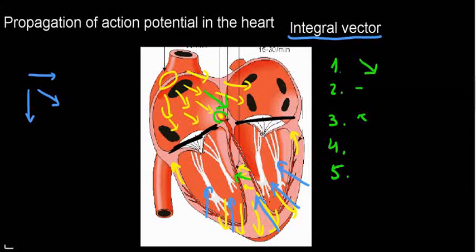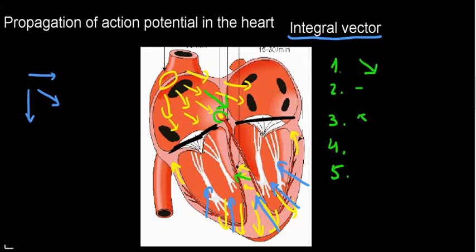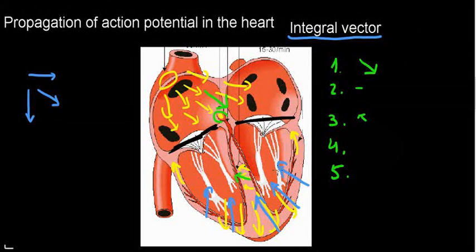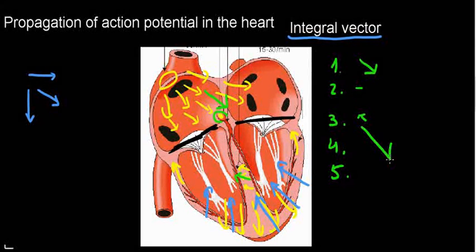Then we have the really big event of those yellow arrows — the major ventricular depolarization. We're going to read the biggest vector of all here.